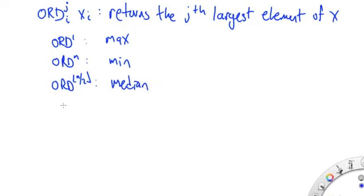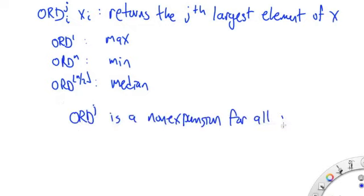Now, it turns out that ord j is a non-expansion for all j. In class we did max, and from max it follows that min, but we didn't show that it was true for all j. So let me prove that, and then I'll give a question that's related.